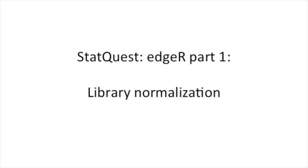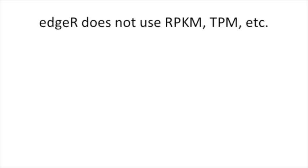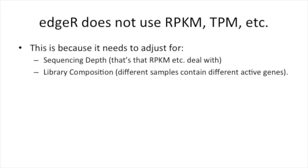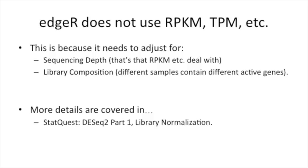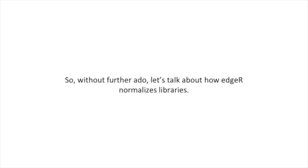Today we're starting part one of our exploration of how EdgeR works. We're going to talk about library normalization. Just like DESeq2, EdgeR does not use RPKM, TPM, or any of the other standard normalization techniques. This is because it needs to adjust for two things: sequencing depth, which is what RPKM and those other methods deal with, and library composition. This means different samples can contain different active genes, and that can change things. I cover this concept in depth in the StatQuest on DESeq2, Part 1, Library Normalization, so check that out if you have any more questions. Without further ado, let's talk about how EdgeR normalizes libraries.